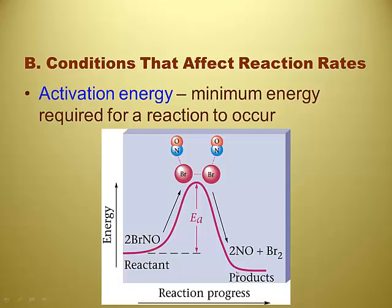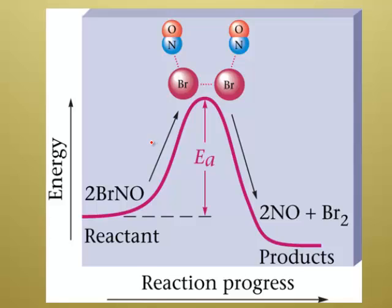We can see here a graph of energy and the reaction's progress. The activation energy is listed as E sub A. It's the amount of energy needed to get the reaction to continue to make products. Reactants are on the left, products on the right, and those reactants have to get over the hill — they have to have a minimum amount of energy listed as E sub A. If you only had a small amount of energy, the reaction would go up the hill but then come right back down and you'd still have reactants. At the top of the hill are intermediates called activated complexes — if they have enough energy, they go down and make products; if they don't, they go back down and make reactants.